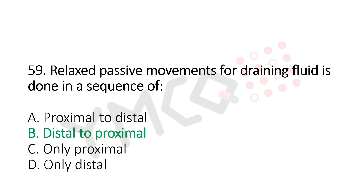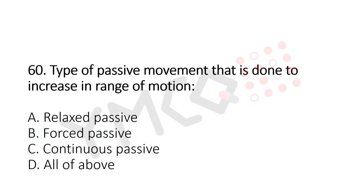Question number 60: Type of passive movement that is done to increase range of motion: Option A, relaxed passive; Option B, forced passive; Option C, continuous passive; Option D, all of the above. The answer is Option B, forced passive.